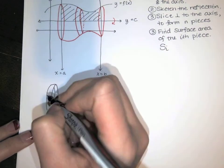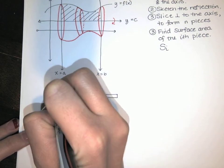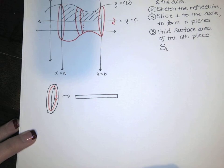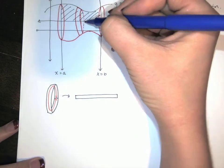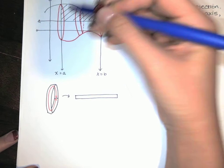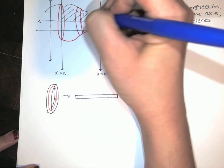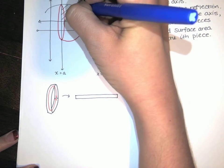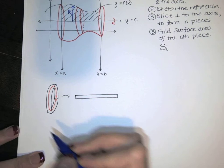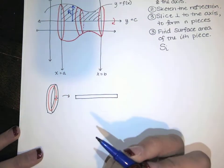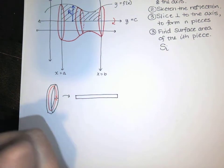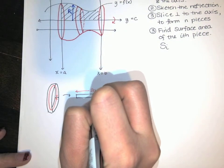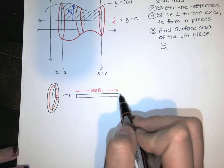To find the area, I need two dimensions. The first dimension is the length all the way around the piece. If R sub i is the radius — from the axis up to the curve — then the circumference, the distance all the way around, is 2πR_i. So that dimension is 2πR_i.